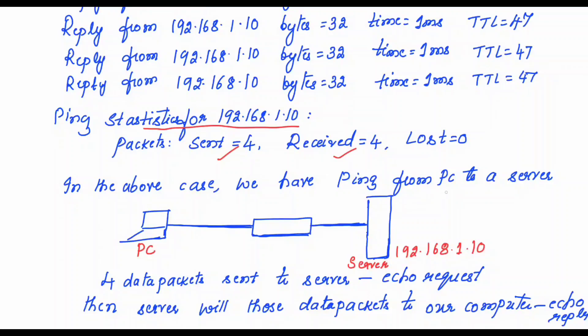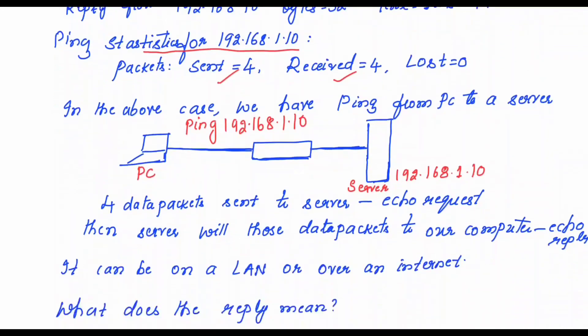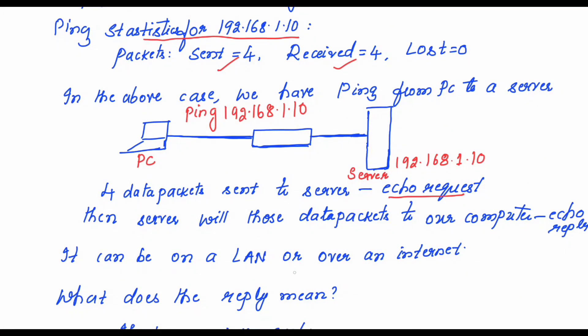In the above case, we have pinged from the PC to a server. We are assuming that 192.168.1.10 is a server and we are trying to ping from this PC. This ping is typed from this PC: Ping 192.168.1.10. Four data packets sent to server - these four packets are called the echo request packet, and then server will send those data packets to our PC and those packets are called the echo reply packets.